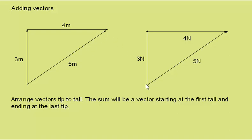Equally here, we start with the tail, go to the tip of the 3N force, then the tail to tip of the 4N force. The sum, or resultant, is from the first tail to the last tip.